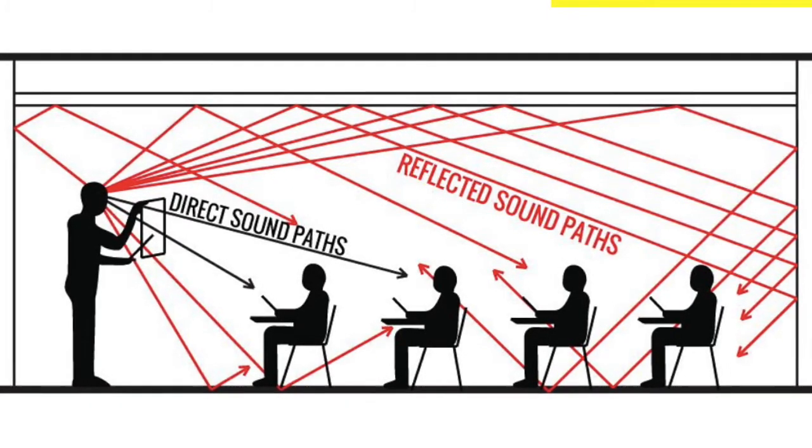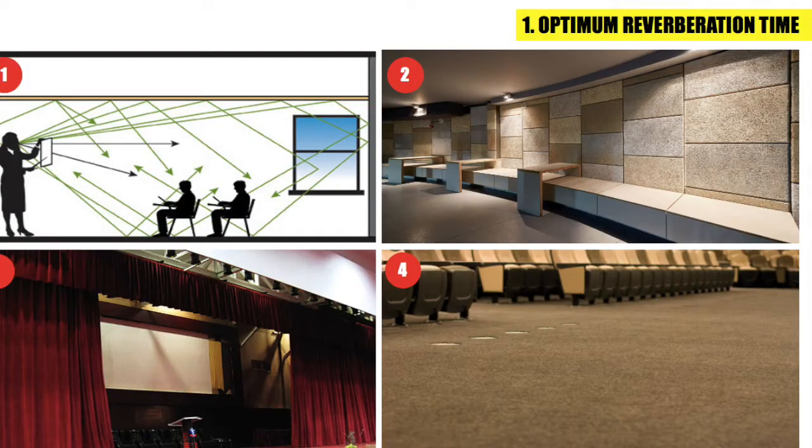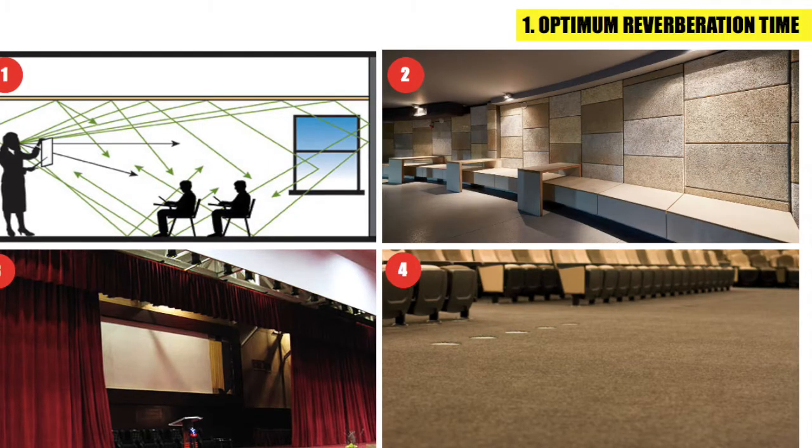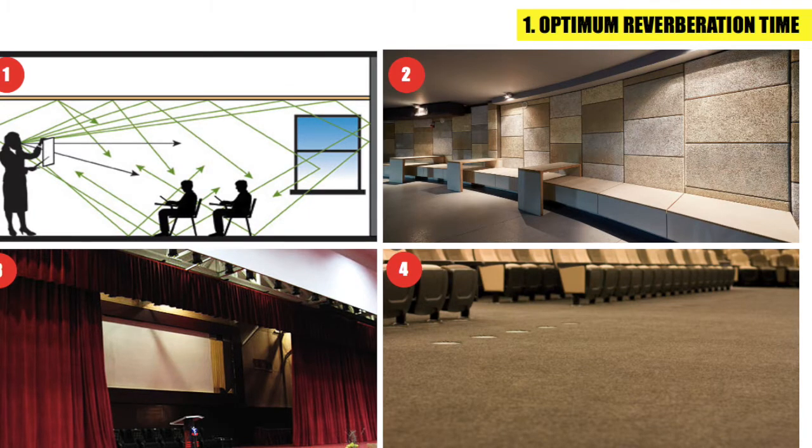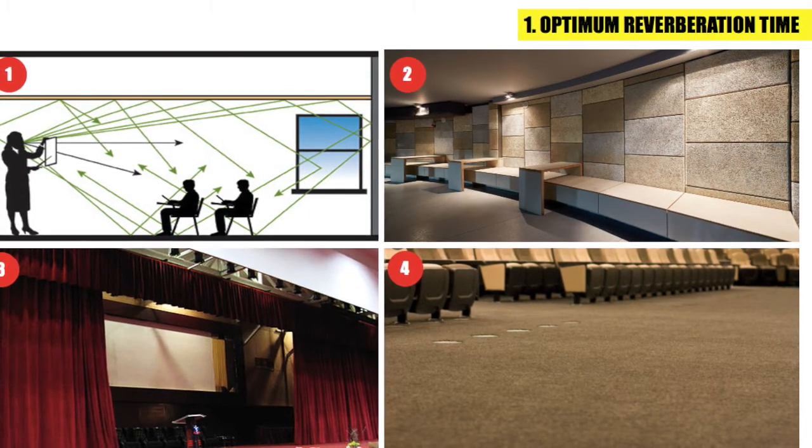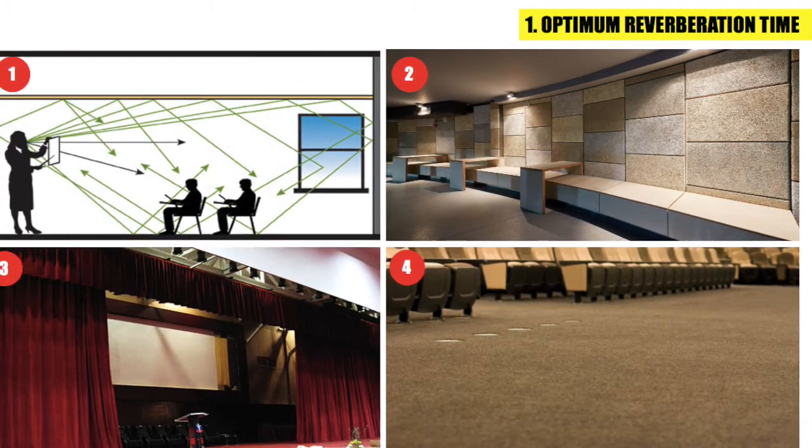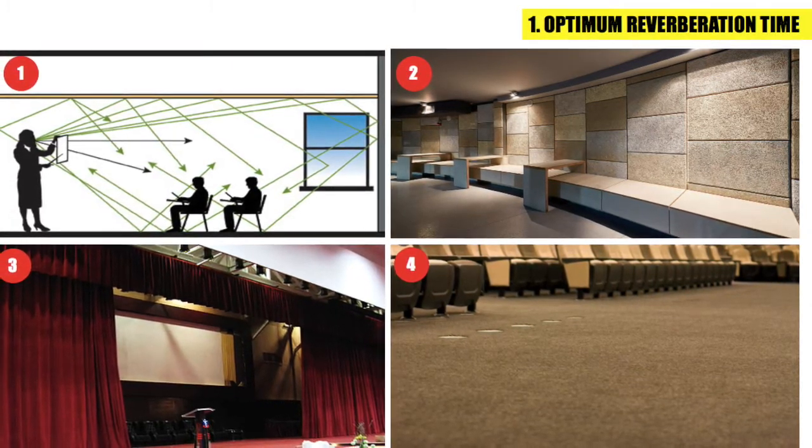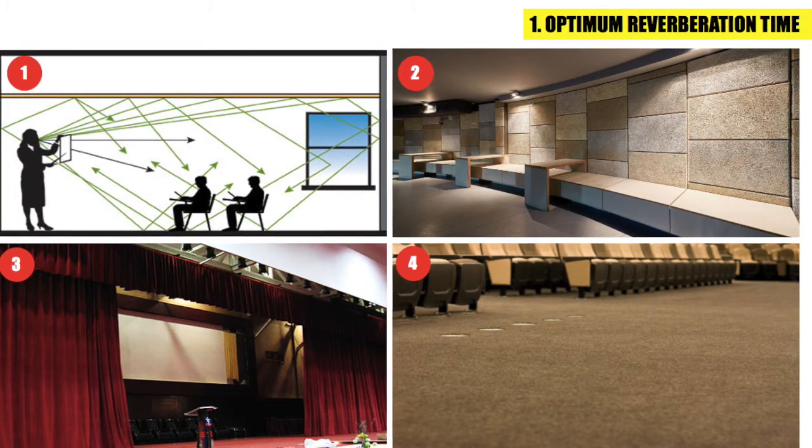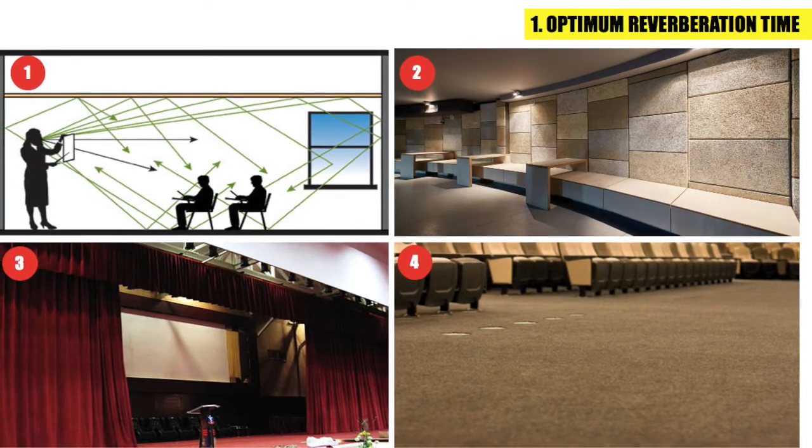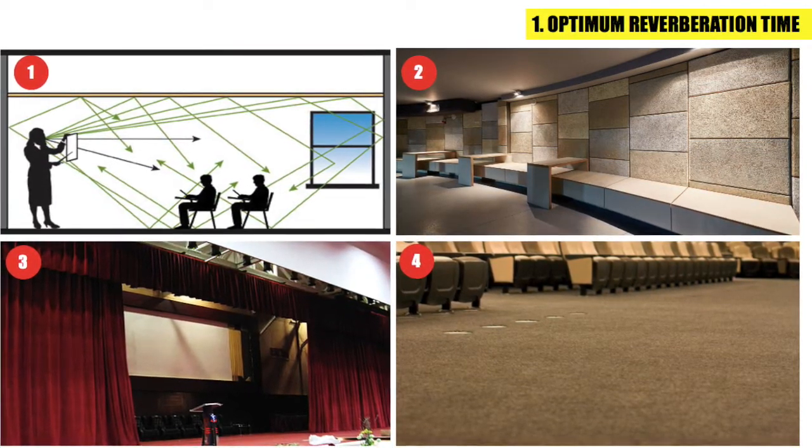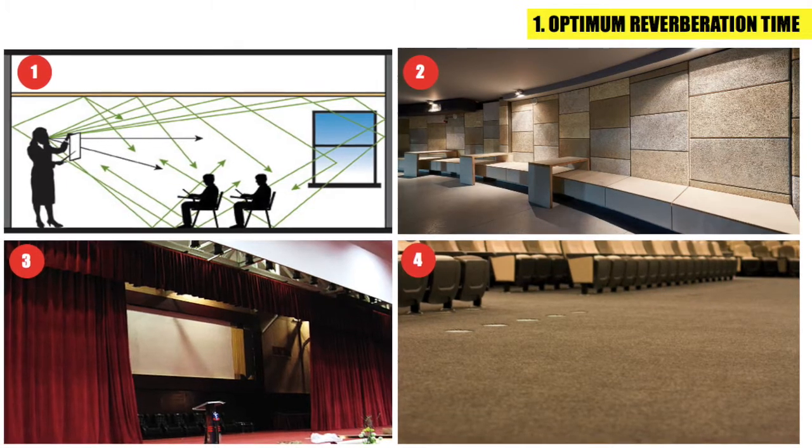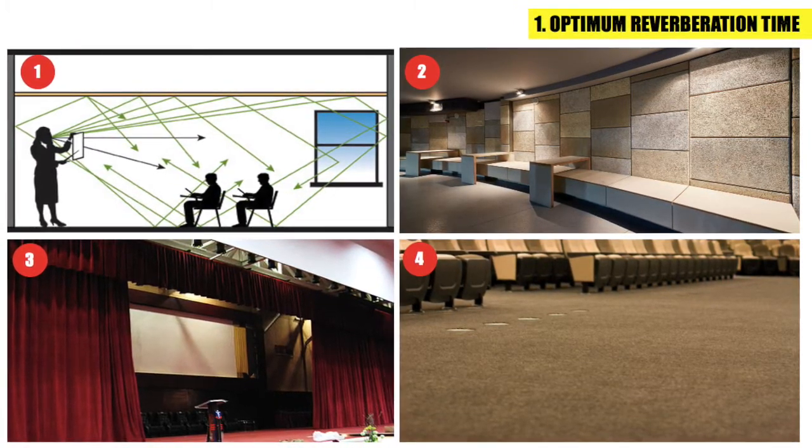So the remedy is: one, providing more windows and ventilators; two, covering part of the ceiling, wall, and even the back of the chair with suitable sound absorbing materials like felt, fiberboard, glass wool, etc.; three, using curtains with folds; four, covering the floor with carpets. These remedies will give an optimum reverberation time.